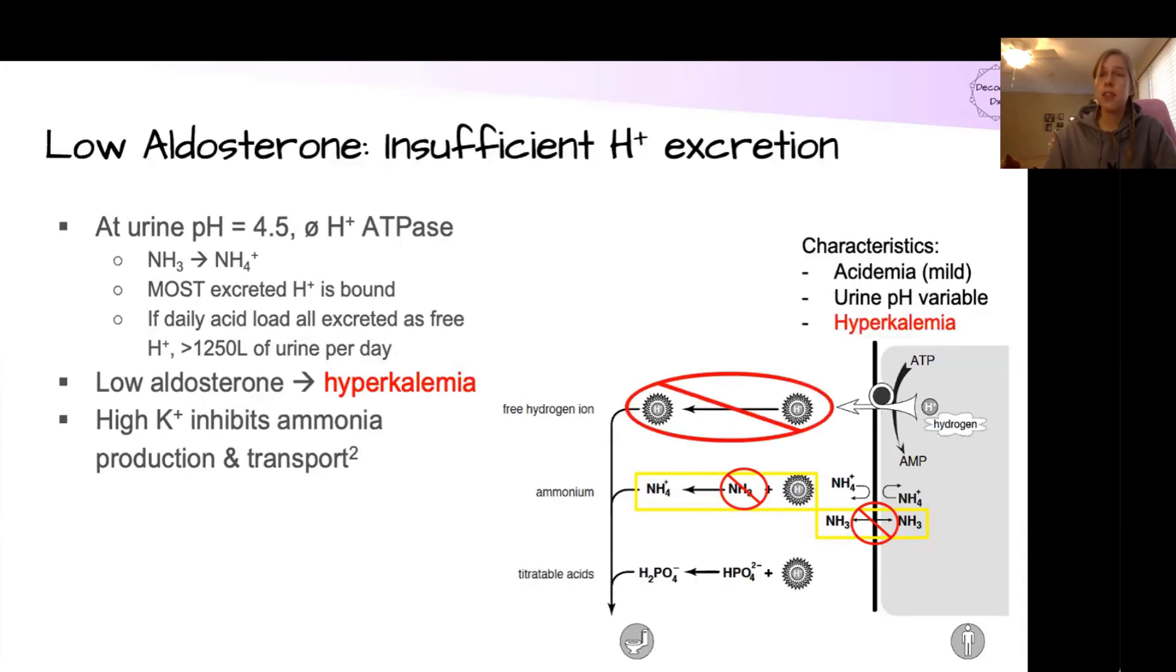So key characteristics of this type of RTA is that we're going to have an acidemia, but in general, it's going to be milder than some of the other RTAs. The urine pH can be variable because there's a lot of other elements that factor into it in this type of RTA. But a key characteristic that will distinguish this is that you will have hyperkalemia. This is one of the more common causes of RTA in the hospital, and it will always have hyperkalemia because that is the original pathophysiologic cause of what's going on.